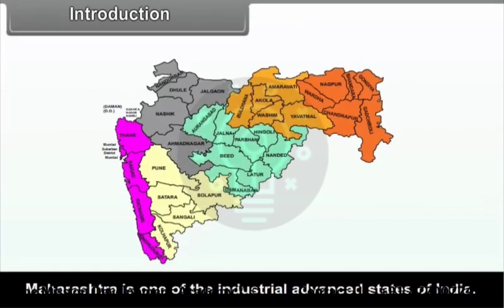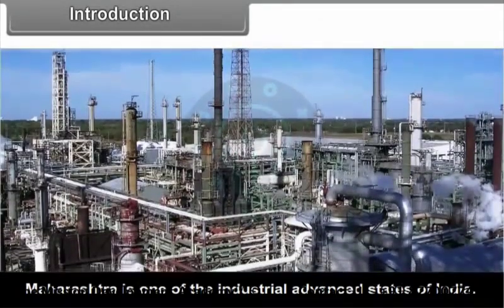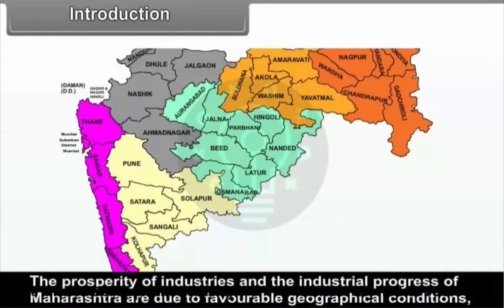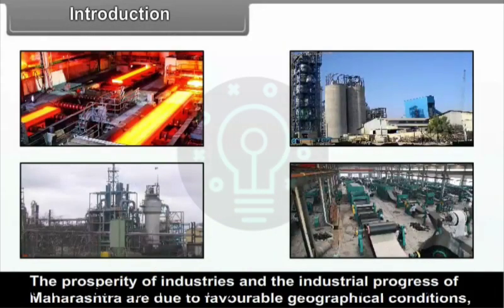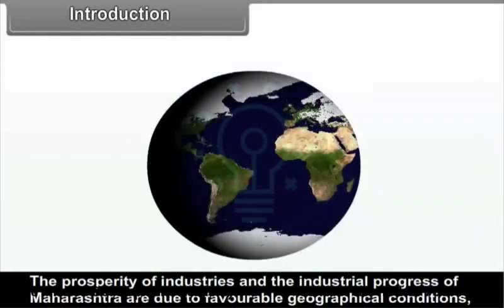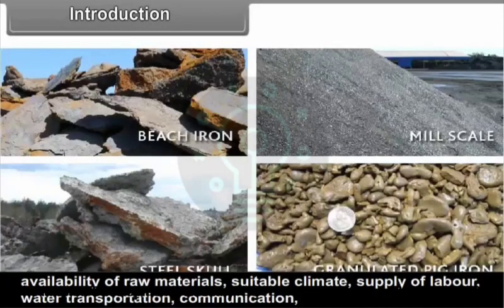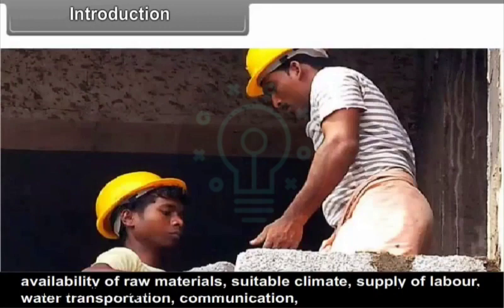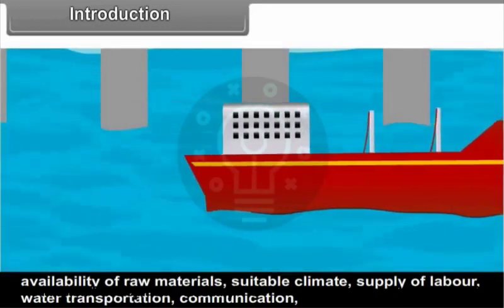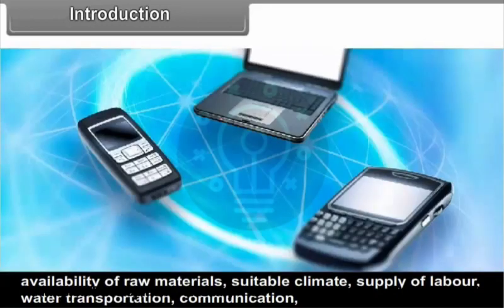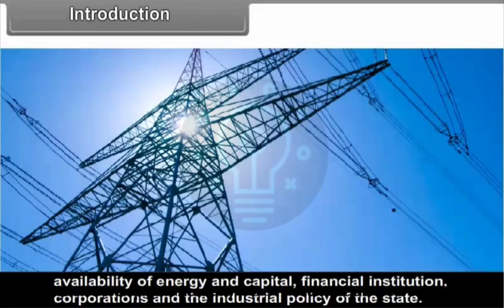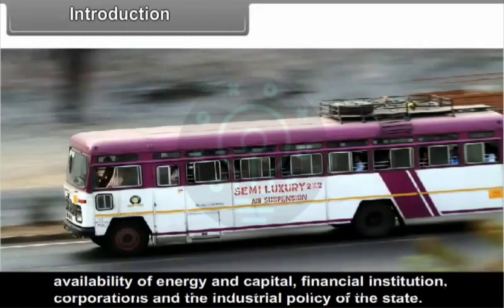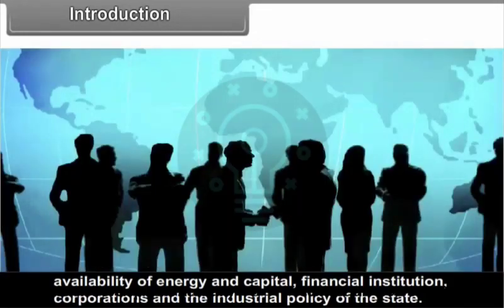Maharashtra is one of the industrially advanced states of India. The prosperity of industries and the industrial progress of Maharashtra are due to the favourable geographical conditions, availability of raw materials, suitable climate, supply of labour, water, transportation, communication, availability of energy and capital, financial institutions, corporations and the industrial policy of the state.